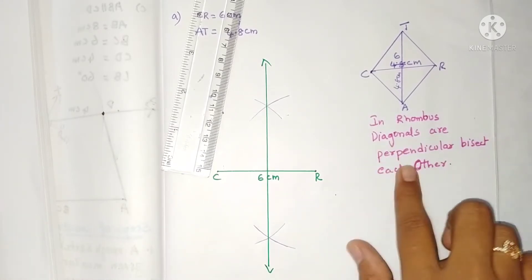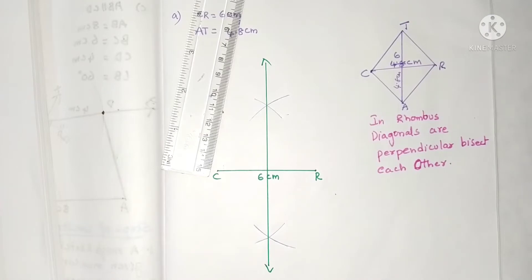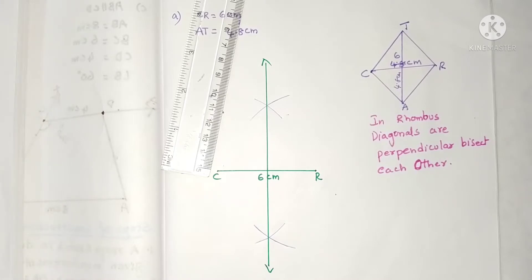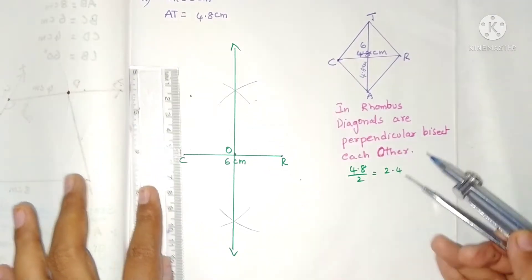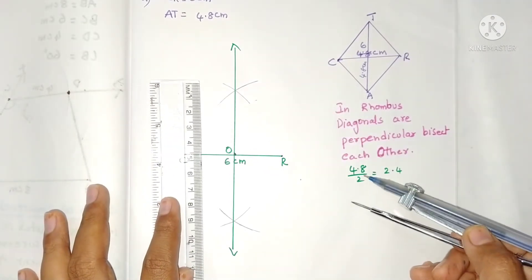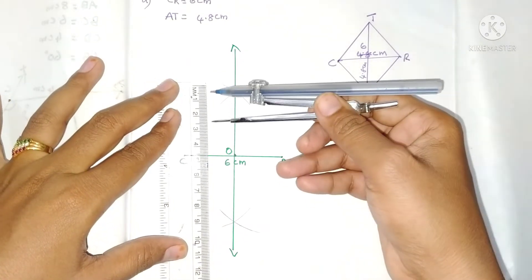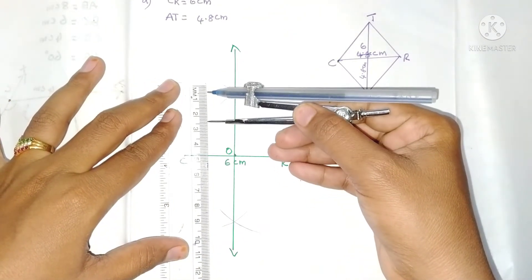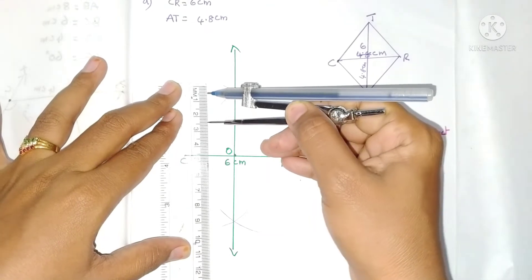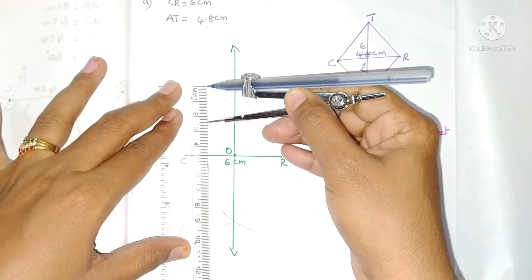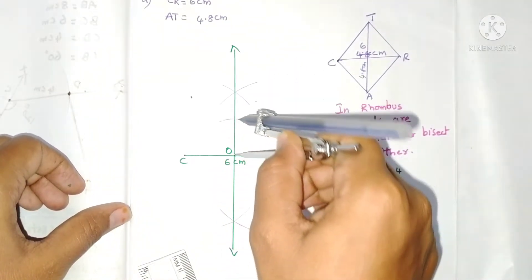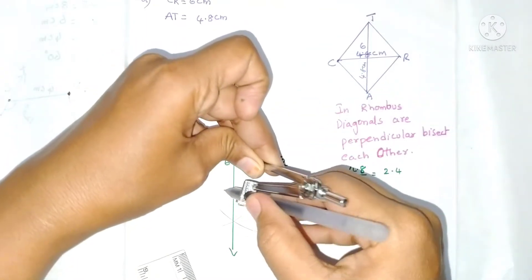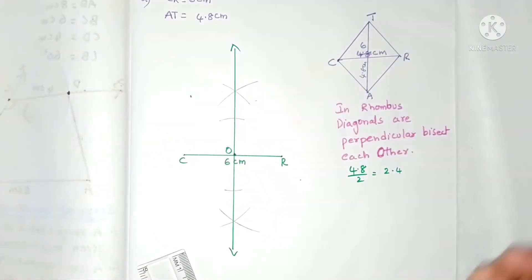The diagonals are perpendicular bisectors of each other — bisect means dividing into two equal parts. Now taking O as center, half of 4.8 is 2.4. So take a 2.4 centimeter radius on the compass.